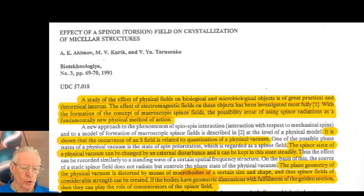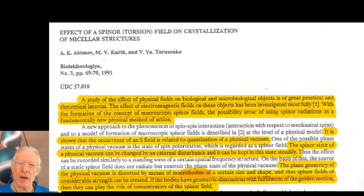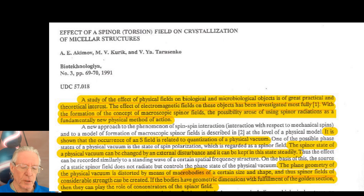In the research, it is shown that the occurrence of an S-field — meaning a spin field, a spin portion of the torsion field — is related to quantization of a physical vacuum, and here physical vacuum means the ether. To translate into clearer terms: it is shown that the occurrence of a spin torsion field is related to quantization of the ether, and therefore points to the multidimensional aspects of the ether in the creative process.